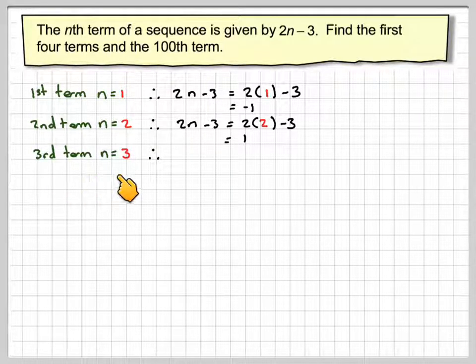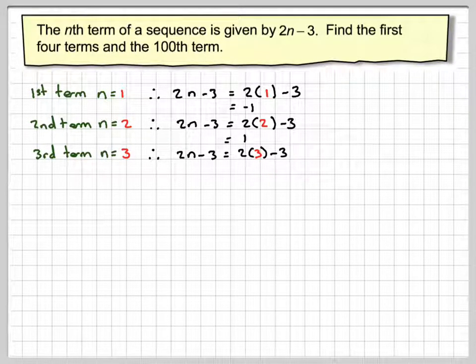The third term, n is equal to 3, so we've got 2n minus 3. We've got 2 times 3 take away 3, which is going to give 6 take away 3, which is 3.